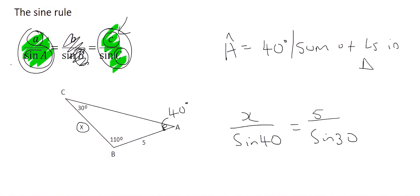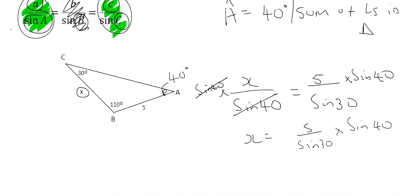And so to get X by itself, we would times both sides by sin 40 because what you do to the one side, you must do to the other side. The reason we're doing that is so that this can cancel. And so we end up with X equals to 5 over the sin of 30 times by the sin of 40. And then you just type all of that in on the calculator. And that's going to give you a value of X as 6.43.